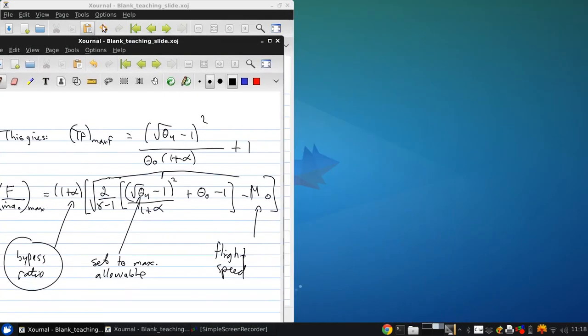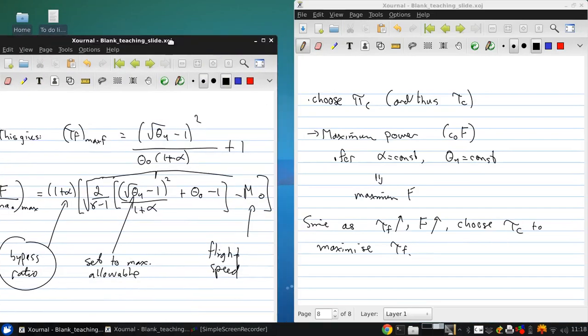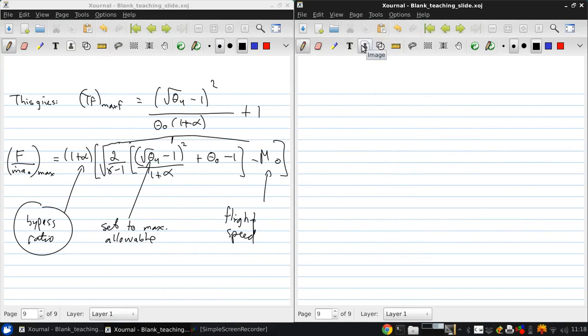So then, that gives us a specific thrust for maximum propulsive efficiency and maximum power. To figure out what that propulsive efficiency is - again, because c_6 equals c_8 - we can write it simply as: 2 over [F/(ṁa_0)(1 + α) + 2].